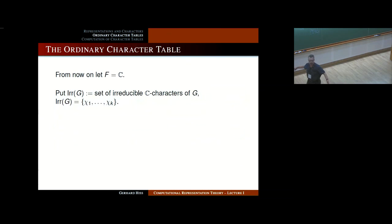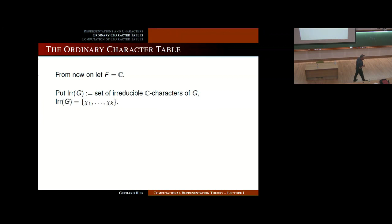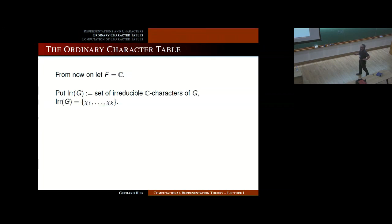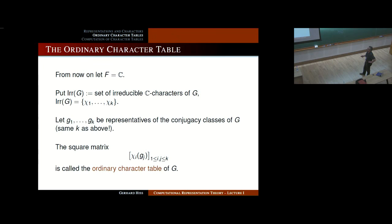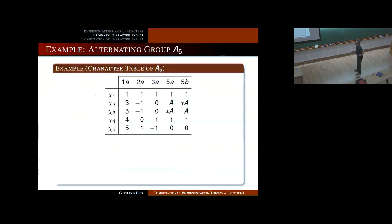Now the theory divides into two big sub-theories. One is if the characteristic is zero, and for simplicity I will assume the field is algebraically closed — then I might as well assume it's the field of complex numbers. The set of irreducible characters is finite; we take representatives of the conjugacy classes of G. In this case K equals the number of conjugacy classes. We have exactly as many irreducible characters as conjugacy classes, and evaluating characters at representatives gives a square matrix called the ordinary character table of G.